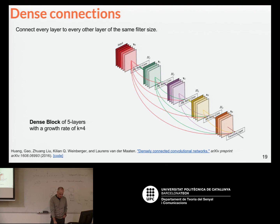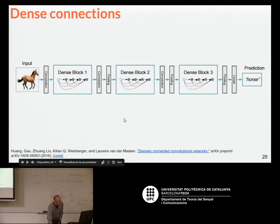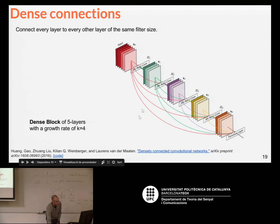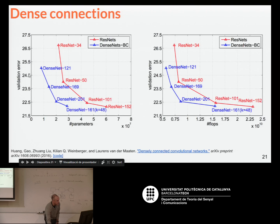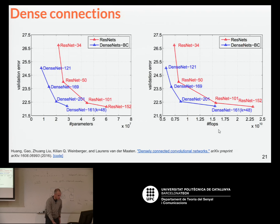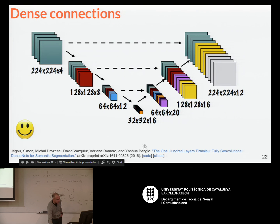These are called DenseNets. They create blocks of dense connections — dense blocks. They outperform ResNets with less computation, fewer FLOPs. This is the latest trend in computer vision, from 2016. Similarly, this approach with dense skip connections has also been applied to semantic segmentation, by some Catalan researchers — Roman and David Vasquez — who are now in Montreal working on this.